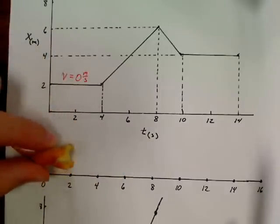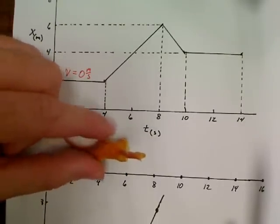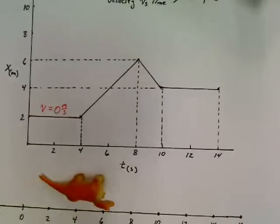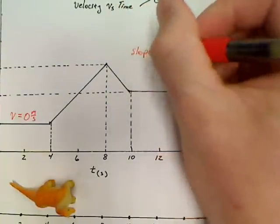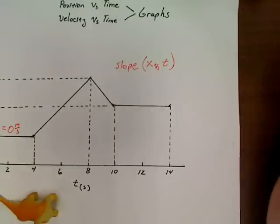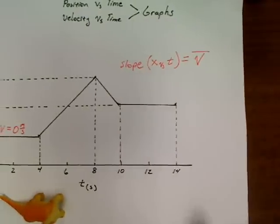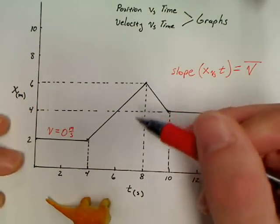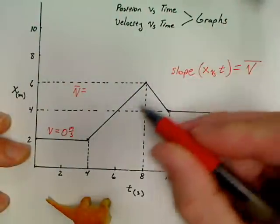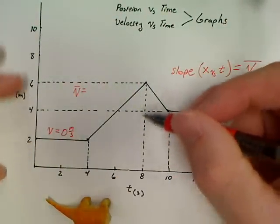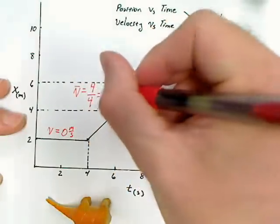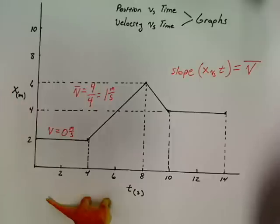Did he have a velocity? Yes, he did. When you're looking at a position versus time graph, the slope of any line on that x versus t graph is going to be equal to your average velocity. So if you find the slope of this line, you've got his velocity. The average velocity equals rise over run: the rise is 2 to 6, which is 4, over a time elapsed of 4 seconds, giving a slope of positive 1 meter per second. That's your average velocity.